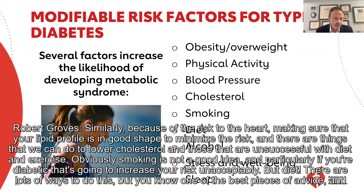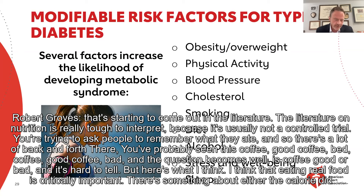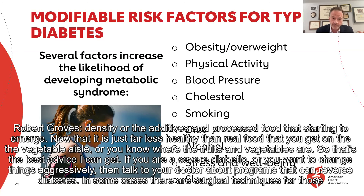Diet — there are lots of ways to do this. The literature on nutrition is really tough to interpret because it's usually not a controlled trial. You're trying to ask people to remember what they ate. You've probably seen back and forth on things like coffee — good, bad, good, bad. But here's what I think: eating real food is critically important. There's something about either the calorie density or the additives in processed food that's starting to emerge now — it is just far less healthy than real food that you get on the vegetable aisle or where the fruits and vegetables are. That's the best advice I can give.